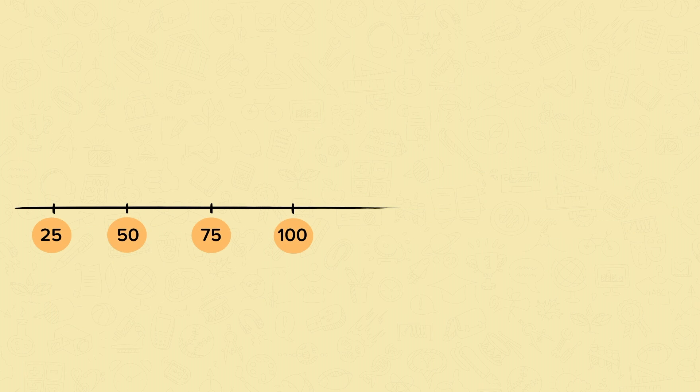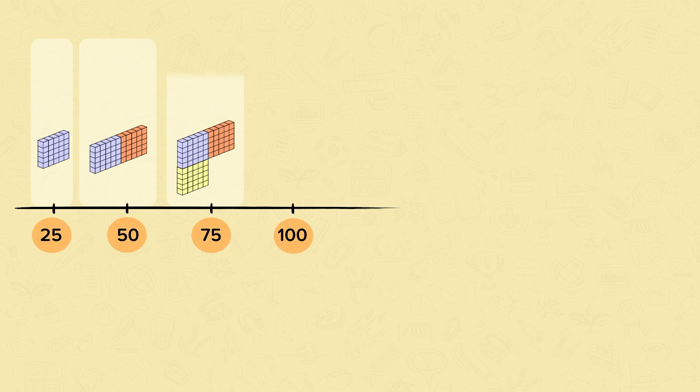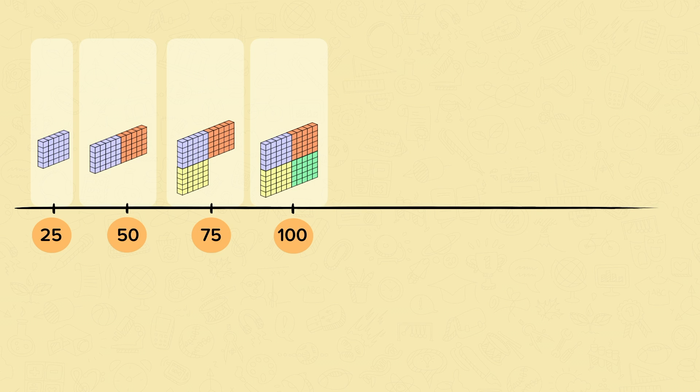The first four multiples of 25 are 25, 50, 75, and 100. Add another 25 and we get 125.